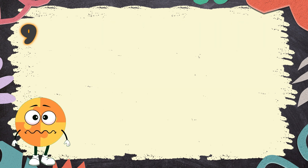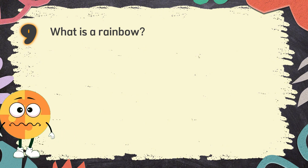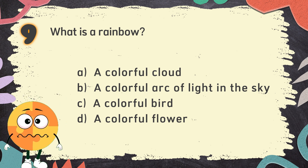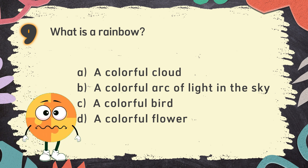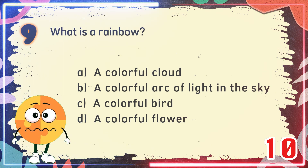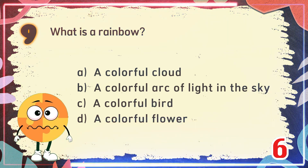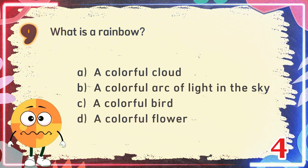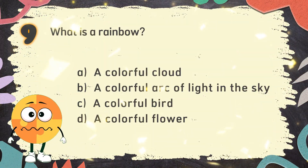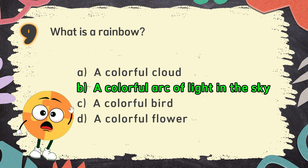Number 9: What is a rainbow? The choices are: A. A colorful cloud, B. A colorful arc of light in the sky, C. A colorful bird, D. A colorful flower. The correct answer is B. A colorful arc of light in the sky.